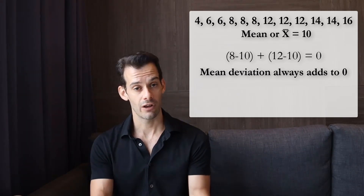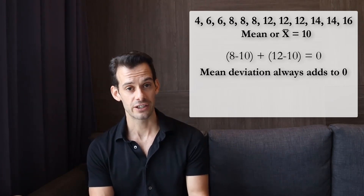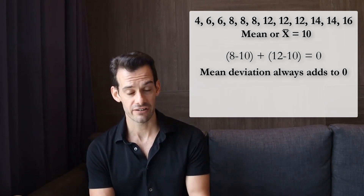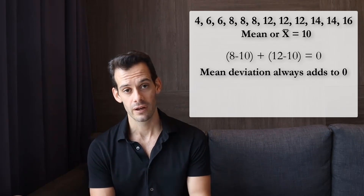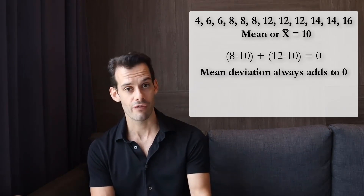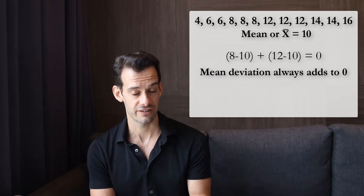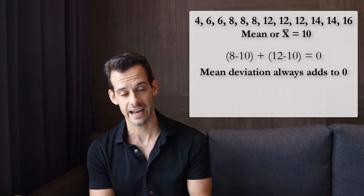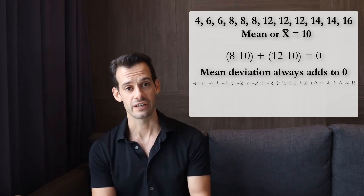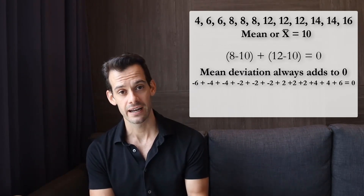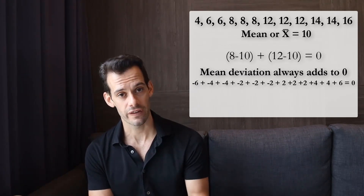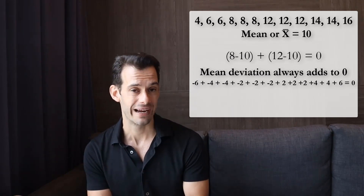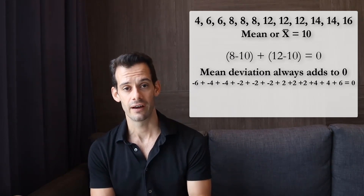The only real purpose of the mean deviation is to make sure you've done your calculations correctly. If you get a mean deviation that's not 0, then either your mean is wrong or you've added the deviations incorrectly. We can check this with our sample: taking the mean of 10, finding all distances from it, and adding them up — they all cancel out and we get a mean deviation of 0.